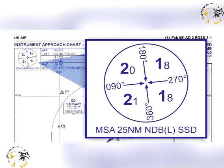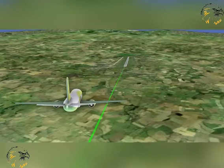Minimum sector altitudes, MSA, are established at all aerodromes and provide at least 1,000 feet obstacle clearance within 25 nautical miles of the homing facility — NDB or VOR — associated with the approach procedure at that aerodrome. In the UK, MSA is specified for each of the cardinal magnetic compass quadrants. On approach plates, the MSA is diagrammatically represented. The lowest level permitted for an arrival route will be the MSA for the appropriate quadrant that contains the arrival track.